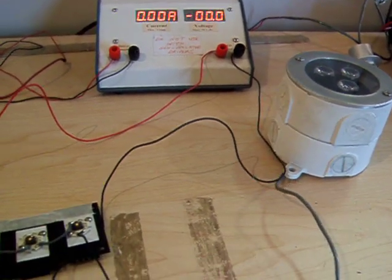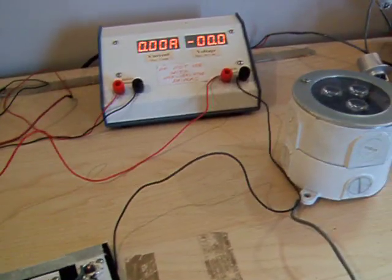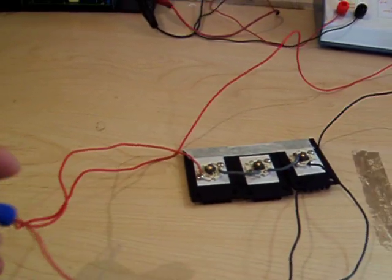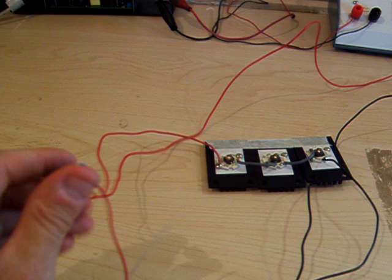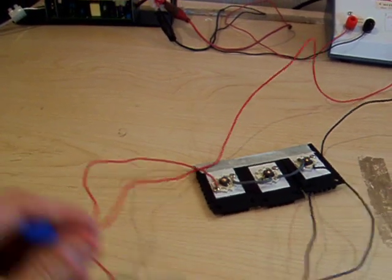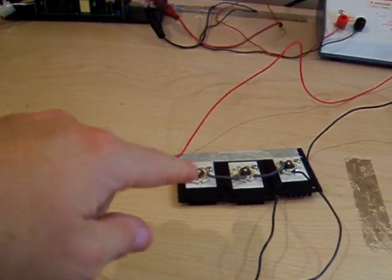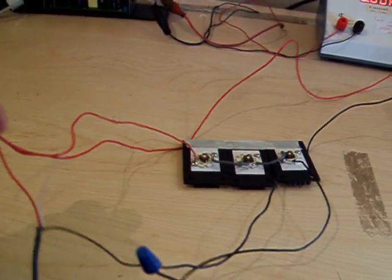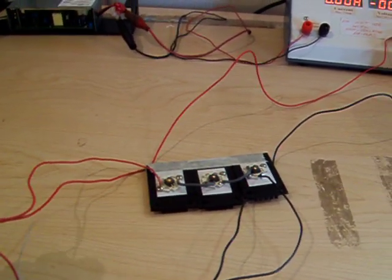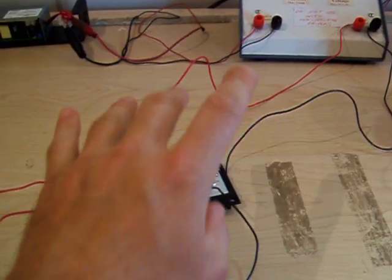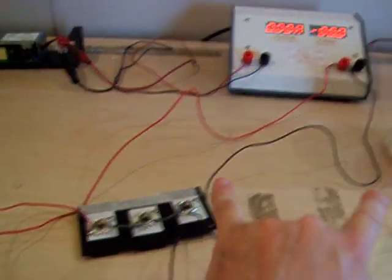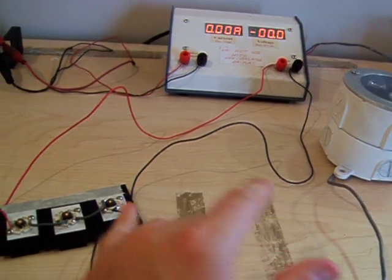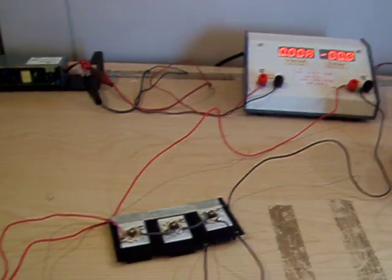You'll notice that each module has a positive and a negative, but they're fed into the same feed. So all the positives are fed in together. You'll see the positive off of this module is fed into the positive off of the power supply. That's wired parallel. Basically each load is wired parallel. So one load would be here, one load would be here, feeding into the same conductors.